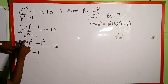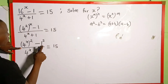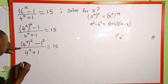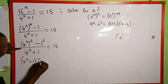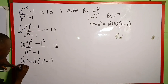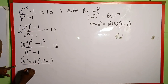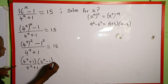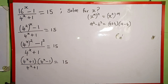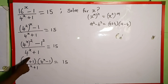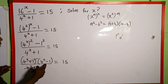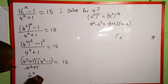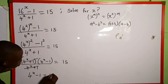Here, 4 to the power of x represents a, and 1 represents b. So we can rewrite this as 4 to the power of x plus 1, multiplied by 4 to the power of x minus 1, all over 4 to the power of x plus 1, which is equal to 15. In the numerator we have 4 to the power of x plus 1, and in the denominator we also have 4 to the power of x plus 1, so they cancel. We are left with 4 to the power of x minus 1, which is equal to 15.